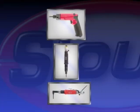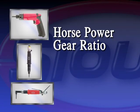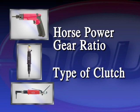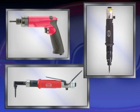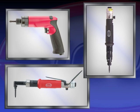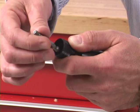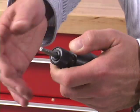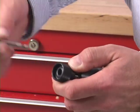The motor size — meaning horsepower, gear ratio, and type of clutch — determines performance and are key factors in the selection of the appropriate tool for a given application. Screwdrivers are generally equipped with a female hexagon spindle to accept standard screwdriver bits.